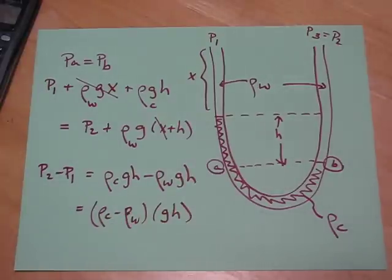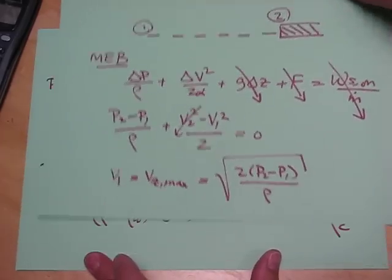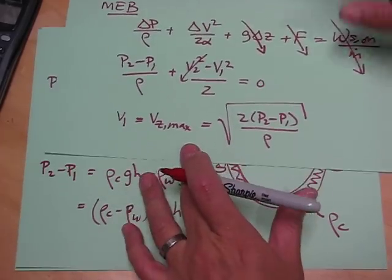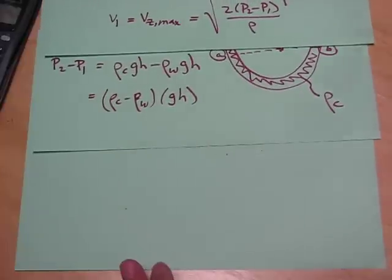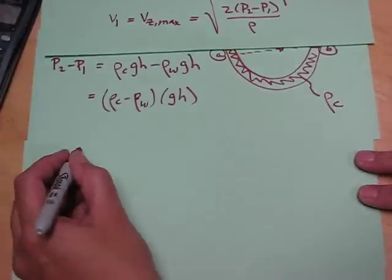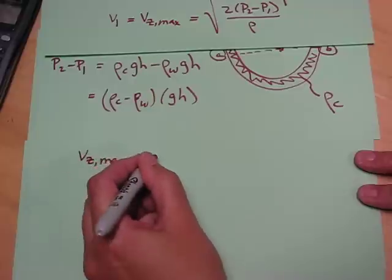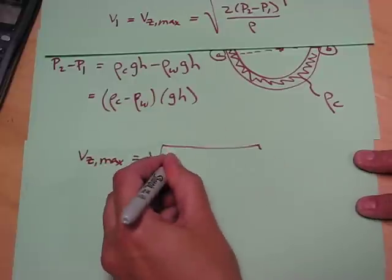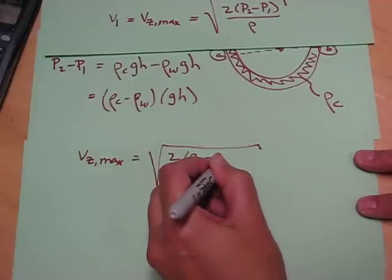We can now combine this with our previous result here to get the velocity of the fluid. So combining the two, we get V max equals the square root of 2 times delta P. Delta P is rho C minus rho w g.